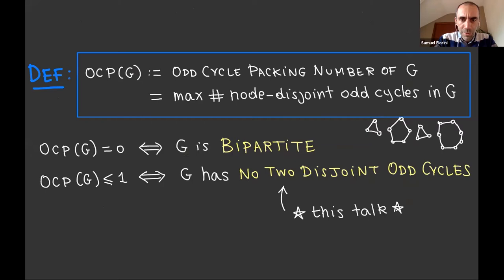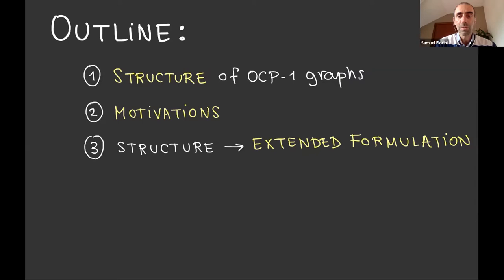I will start with a definition before giving the outline. So the focus here will be on the odd cycle packing number of the graph. That's defined as a maximum number of node disjoint odd cycles in the graph. Notice that node cycle packing number of zero is the same as saying that the graph is bipartite. So we don't have any odd cycles and a graph has no two disjoint odd cycles. That's part of the title of my talk. If you don't leave the OCP or cycle packing number is at most one. Okay. So I will tell you about the structure of OCP one graphs, then about motivations. And finally, explain how from the structure, we get an extended formulation for the stable set polytope.